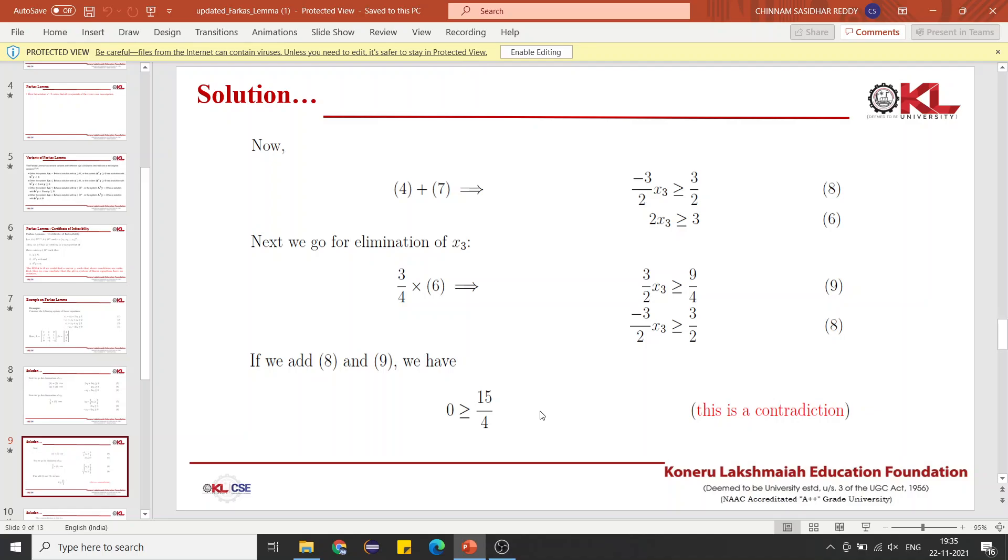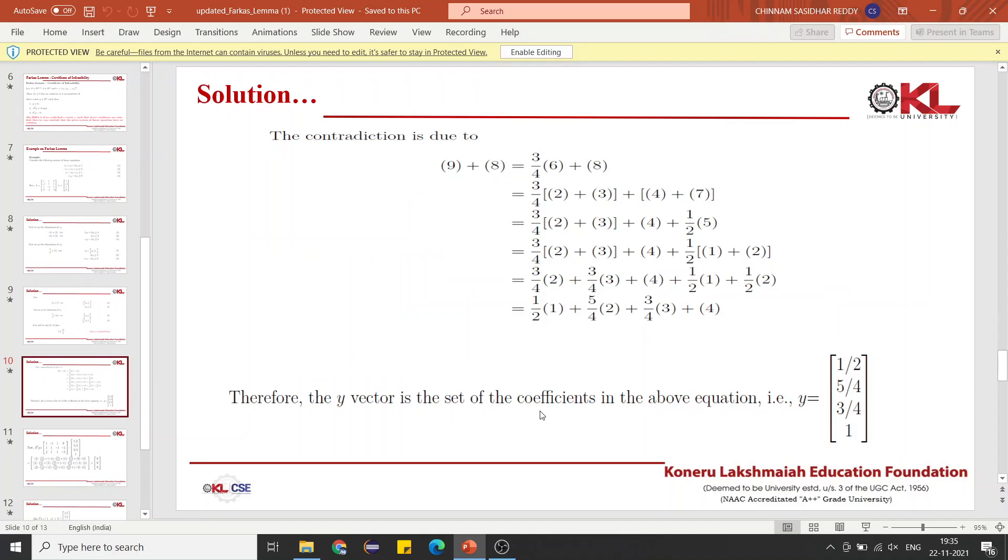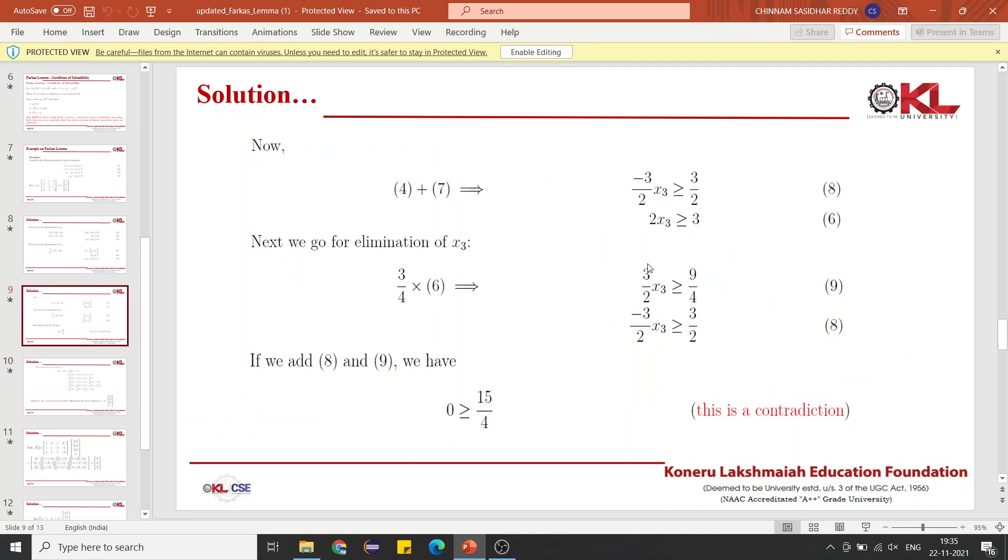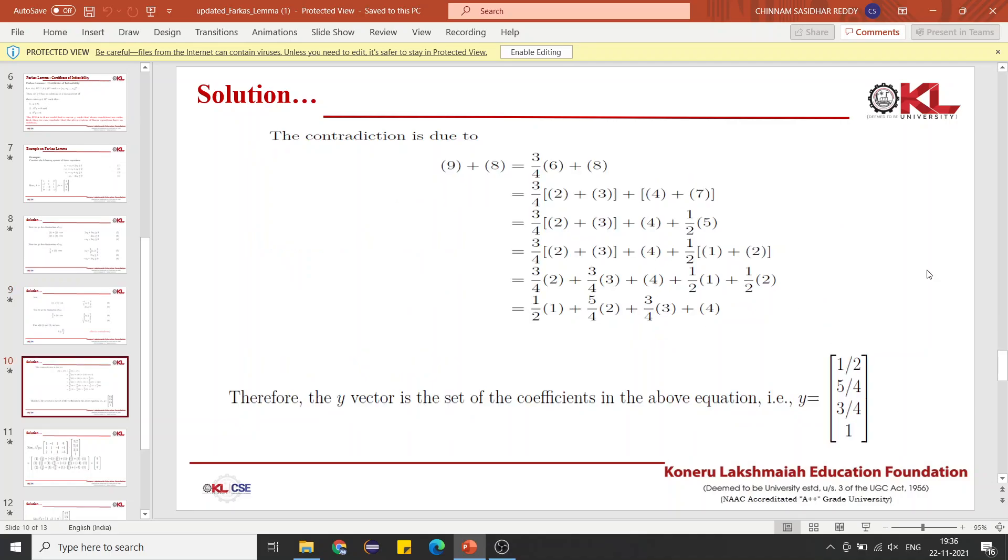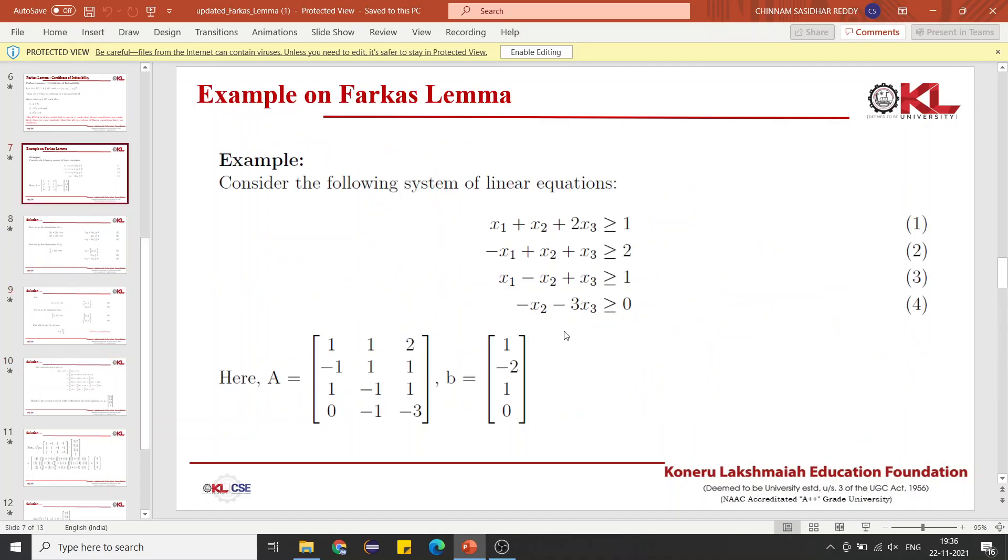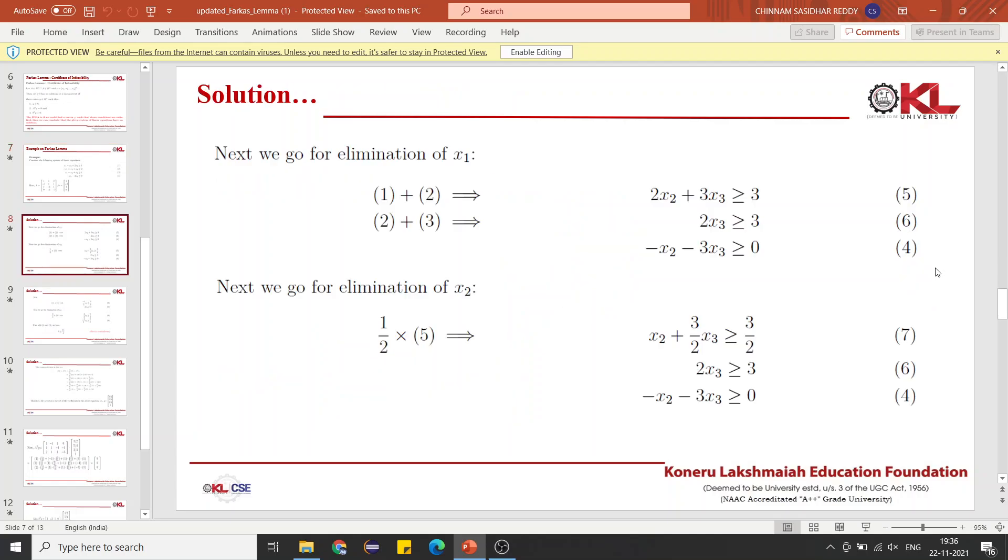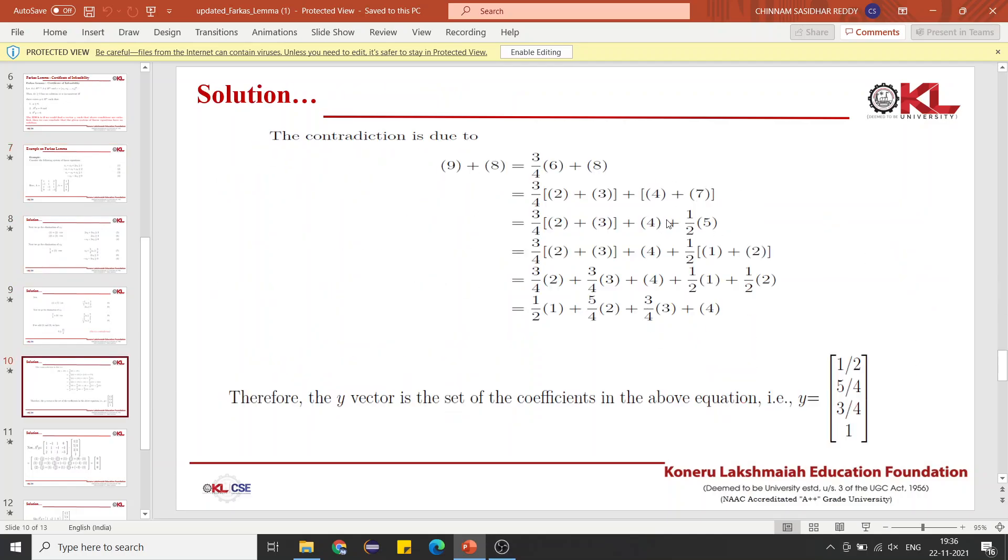The next step is you will backtrack. The last equation is 9 plus 8. We will write 9 plus 8 and backtrack. We need to see where 9 and 8 came from. We will backtrack to the initial numbers. Initial numbers are 1, 2, 3, and 4. We need to write 9 plus 8 in terms of 1, 2, 3, 4.